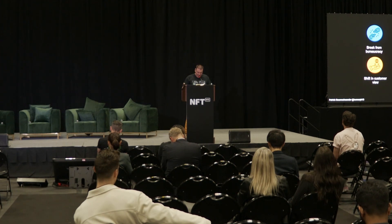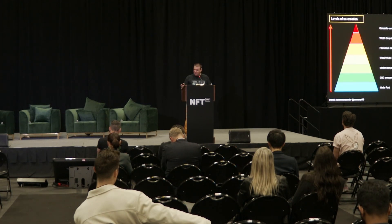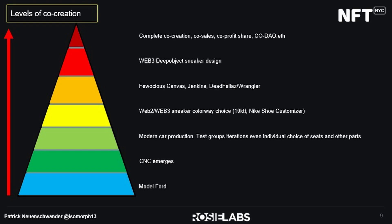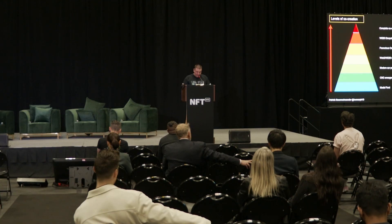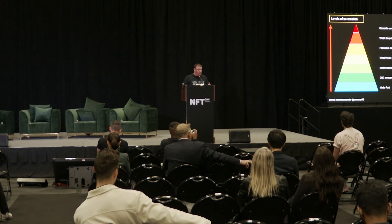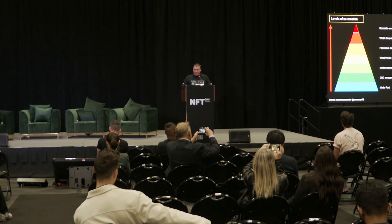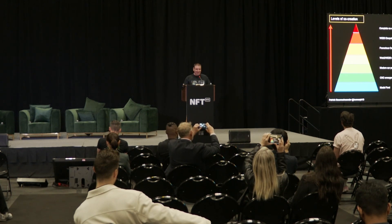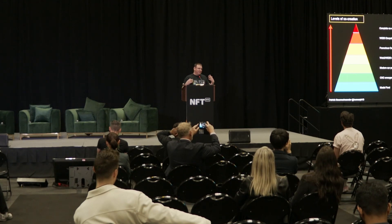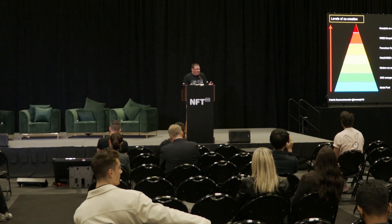You have to embrace these new possibilities and not try to stay away from these changes. This has naturally been happening all along — think about the first Ford Model T: no customization, no co-creation, you got a car and that was it. Then CNC emerged and we got nicer things. Now in Web3 and Web2, sneaker colorways and 3D printing are emerging where customization is part of the product. Deep Object AI is very high up in this pyramid because they started by asking the customer what they want.